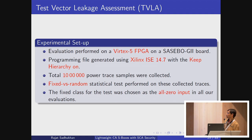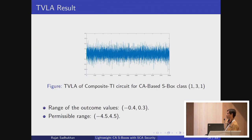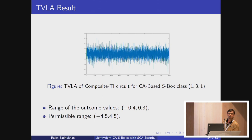We evaluated our design using fixed-versus-random text vector leakage assessment and collected 1 million traces. We obtained values of -0.42 and +0.3, and the permissible range is -4.5 to +4.5. We can conclude that our design is side-channel secure.